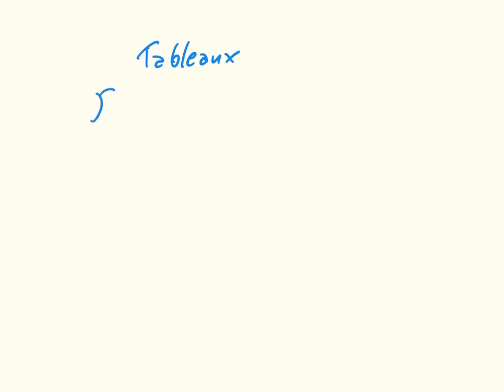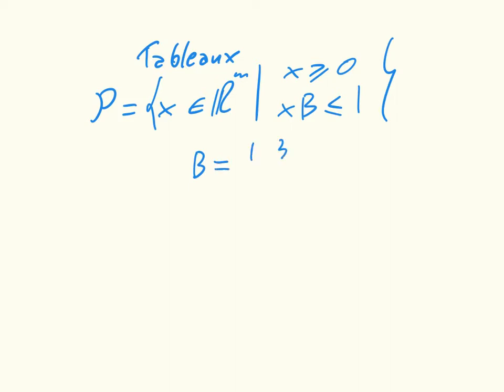Just to remind ourselves, the best response polytope for the row player is given by this convex hull. So we have these inequalities: x greater or equal to 0 and xB less than or equal to 1. And the example we've been using is B equals (1, 3; 3, 1), just an augmented matching pennies game.